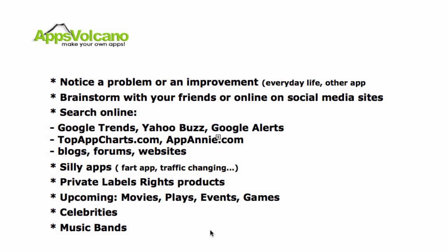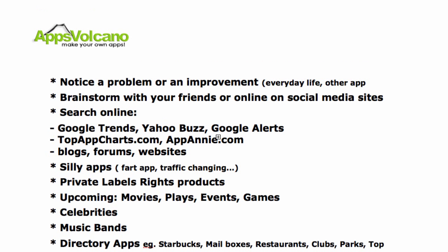The next way is directory apps — locators like 'where are Starbucks, mailboxes, restaurants, clubs, parks, or the best coffee shops and pubs.' Those kinds of apps are very hot as well. You can see a very good example on our website appsvolcano.com — we have a directory app called the Leeds Clubs Finder.